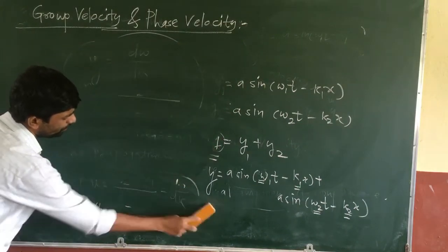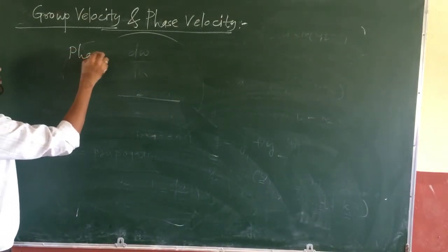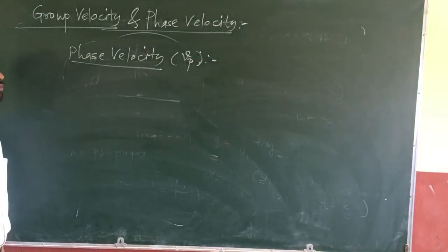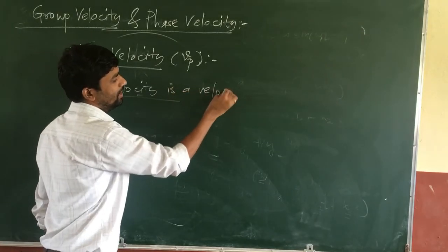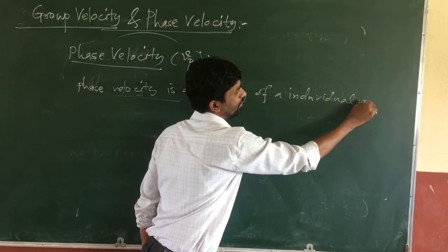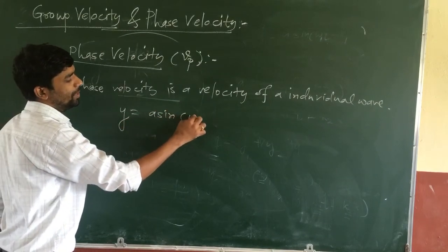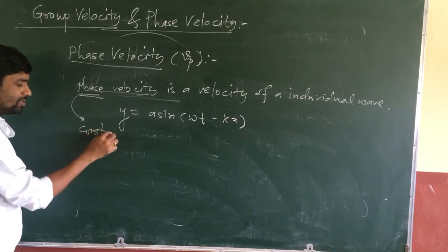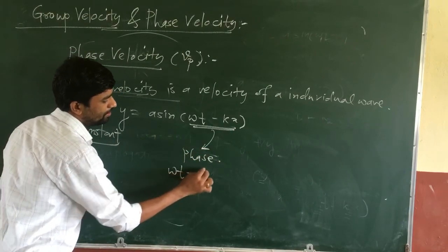Next we look at phase velocity. Phase velocity is the velocity of the individual component wave. The displacement equation of a wave is y = a sin(ωt − kx). In phase velocity, the phase of a particular point is constant — that is the important condition. The term (ωt − kx) is known as the phase.